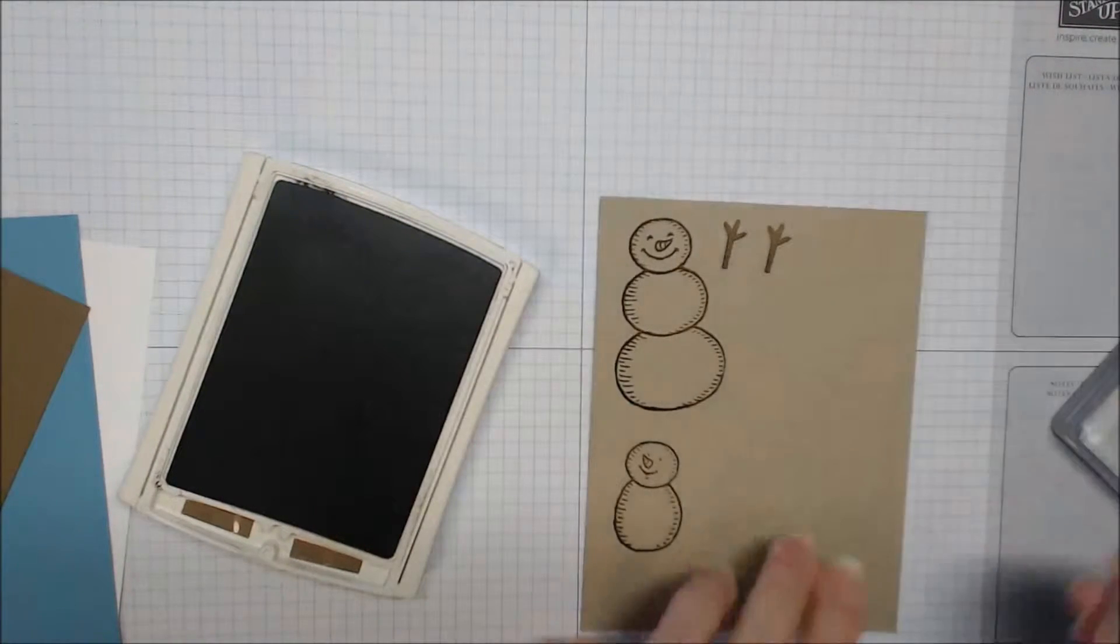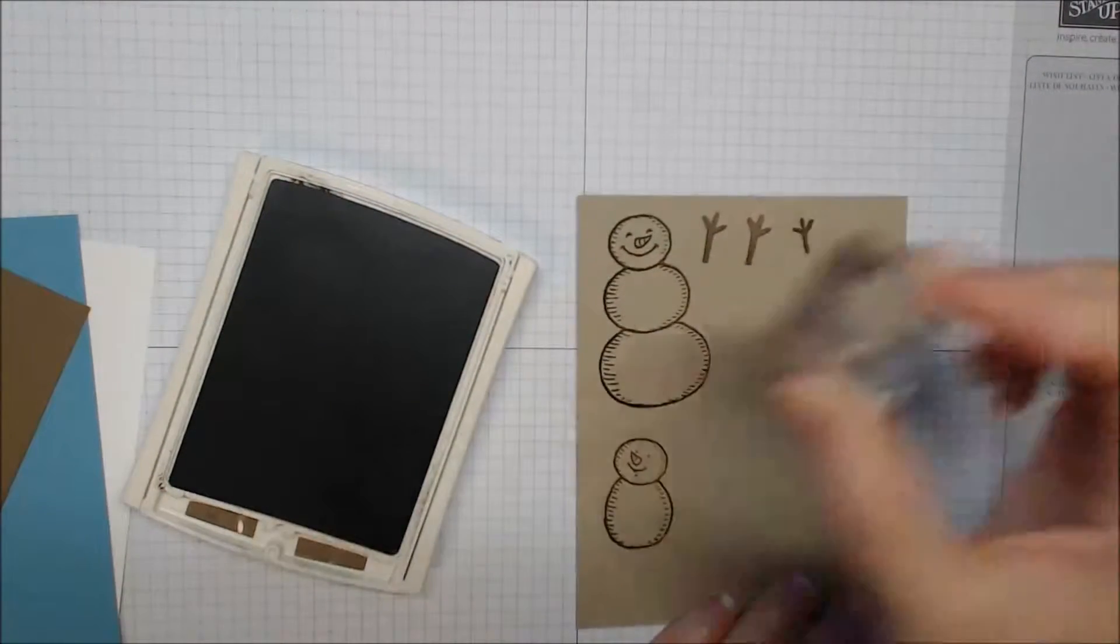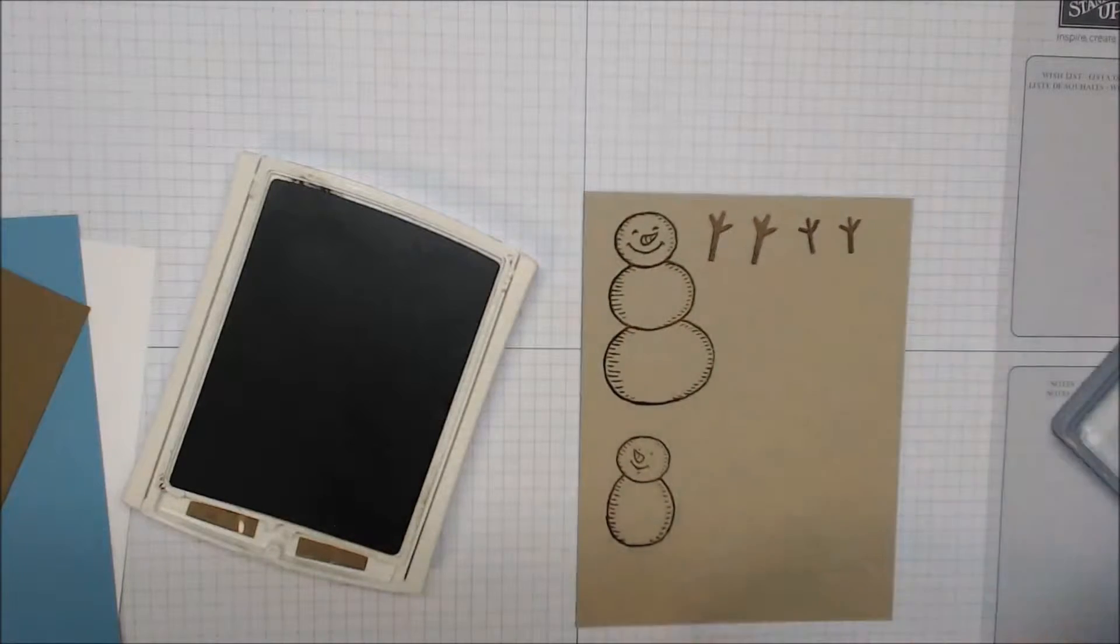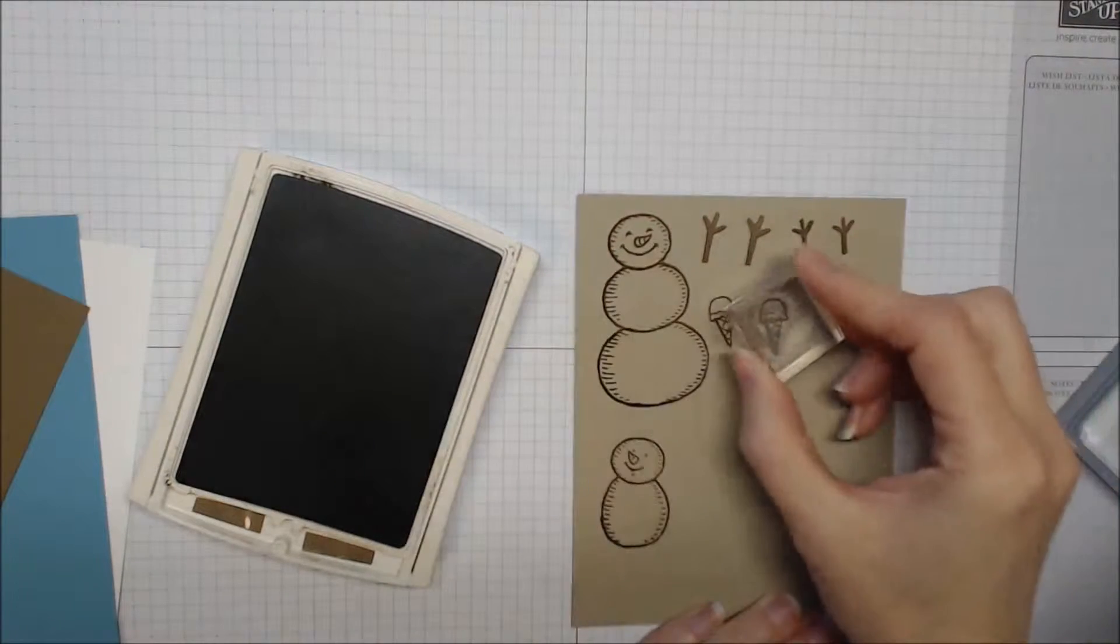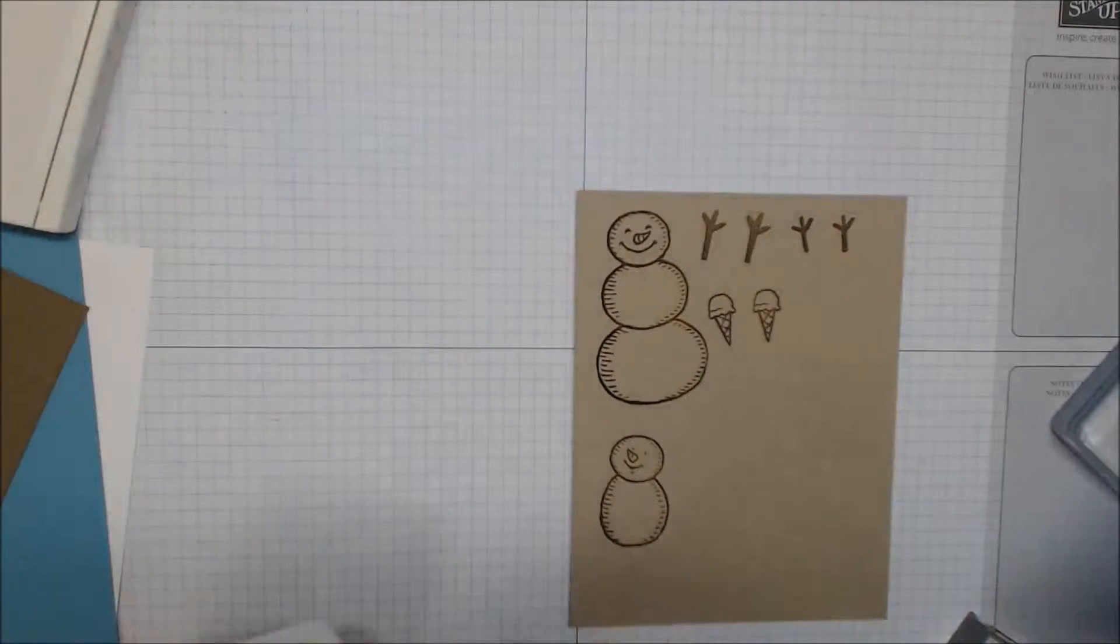Now let's go ahead and do some arms. We need two of the larger arms as well as two of the smaller arms. Now we're going to go ahead and stamp two ice cream cones.